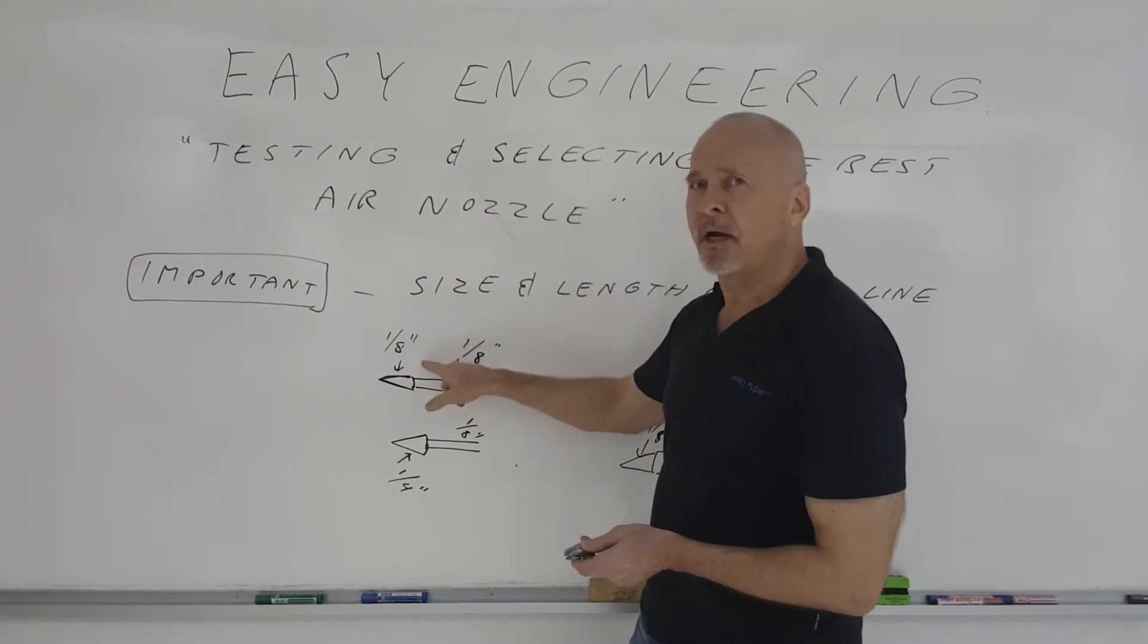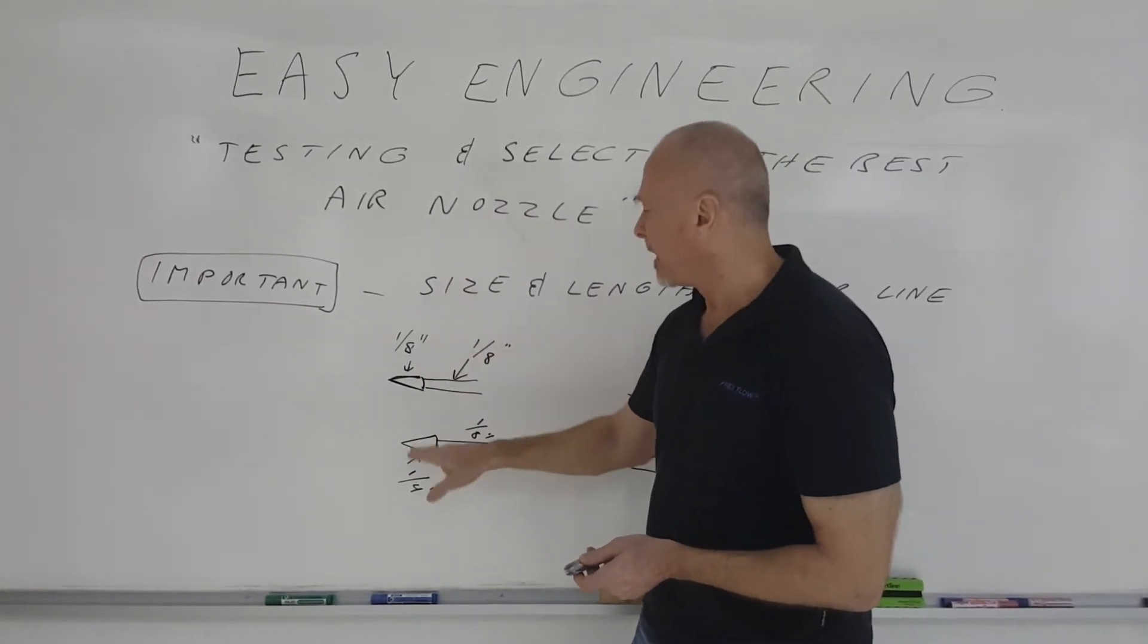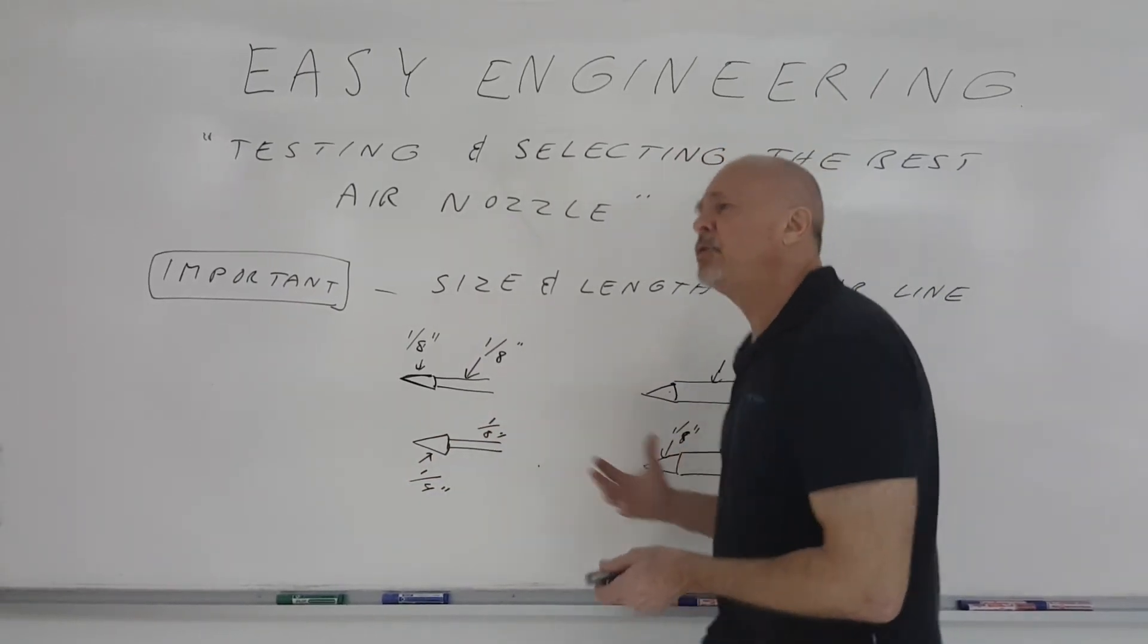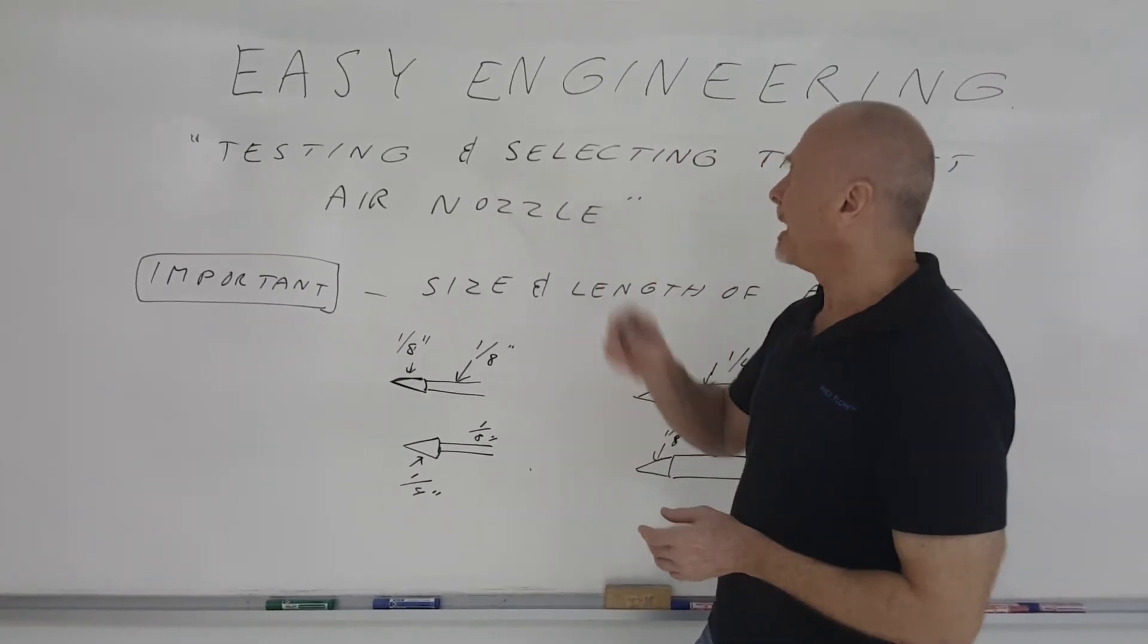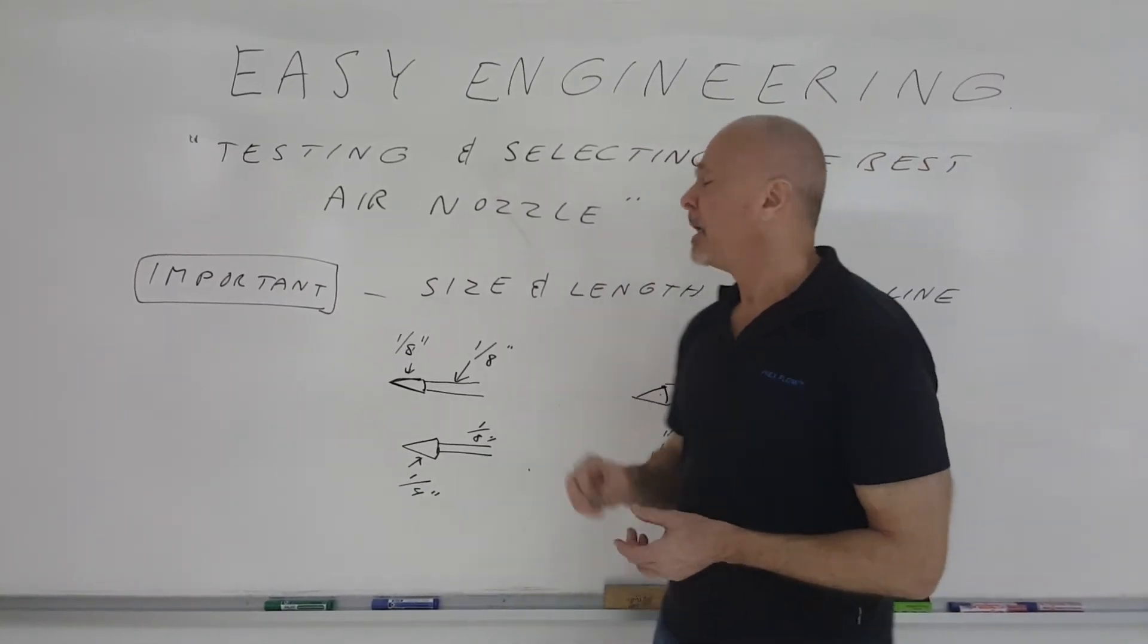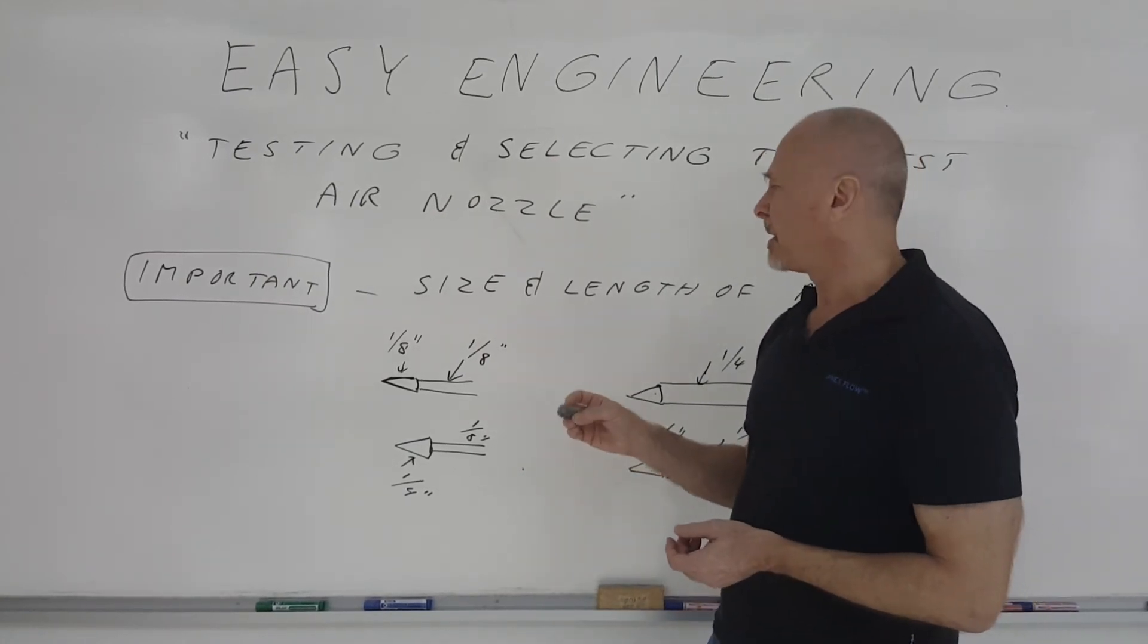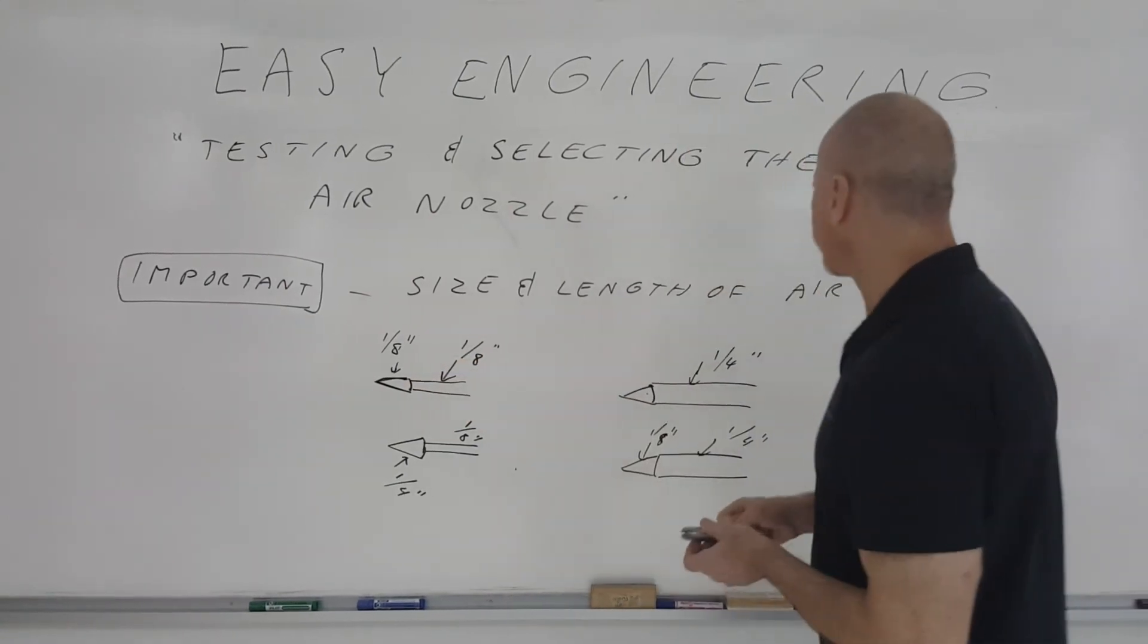So that one-eighth inch nozzle can actually be giving you a higher force than that quarter-inch nozzle, just because the quarter-inch nozzle is trying to draw more flow through it. So typically, the easiest engineering solution is to choose a nozzle for your application that's going to be the same size as the line feeding that particular nozzle.